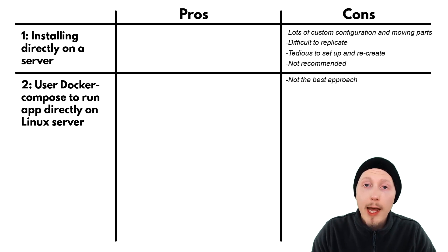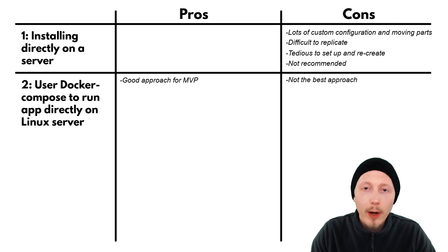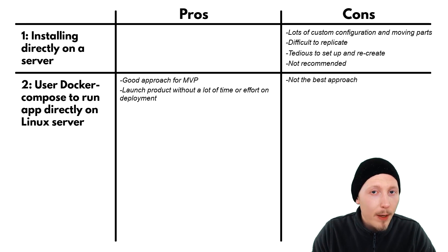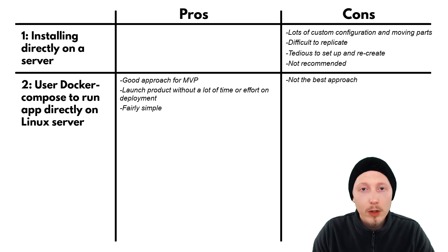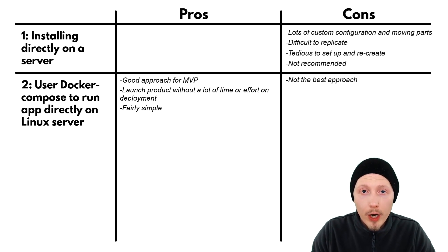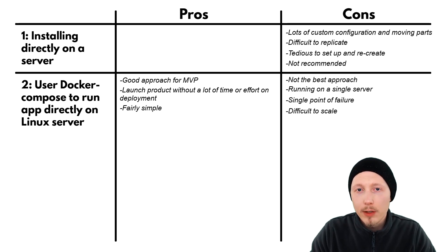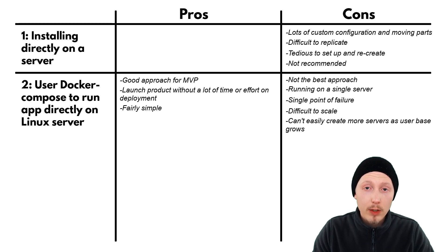It's not the best approach, but it is a good approach if you're just looking to get a minimum viable project up and running. If you have a product you want to launch without much time and effort on deployment, this is fairly simple: create the server, copy the project files to the server, and run the Docker Compose file. However, your application will be running on a single server, which is a single point of failure and makes it very difficult to scale as your user base grows.